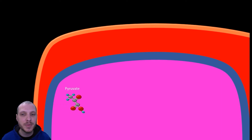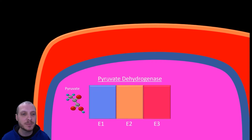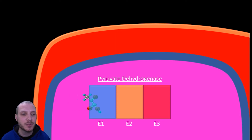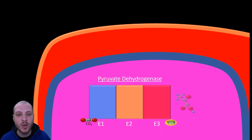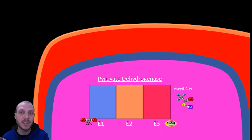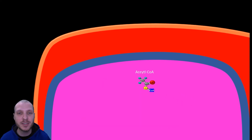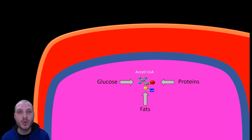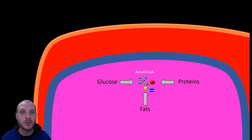Zooming into the mitochondria, pyruvate has been shuttled into the mitochondrial matrix. It interacts with a complex of enzymes known as pyruvate dehydrogenase — specifically three enzymes titled E1, E2, and E3. As pyruvate passes through this complex, we change the chemical structure: we remove CO2, add a CoA group, and generate an NADH for the electron transport chain. The important result is a molecule called acetyl-CoA, which can enter the Krebs cycle. Acetyl-CoA can also be formed from proteins and fats in our diet — making it the linchpin from the food we eat to the energy we create in our mitochondria.